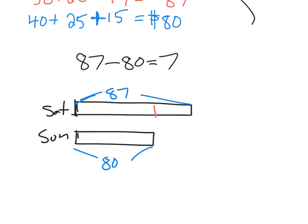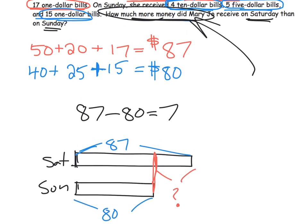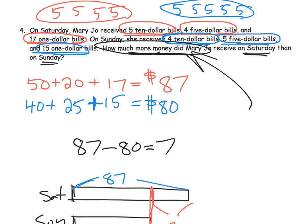We can draw a line showing how much more Saturday is than Sunday — this is a classic way to draw two tape diagrams side by side. The answer is she earned seven dollars more on Saturday.